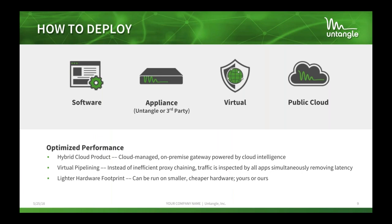Untangle is by design a piece of software — we sell appliances with it pre-installed, but you can use third-party hardware, our OVA file for VMware ESXi, or throw our ISO download into Hyper-V or Citrix Xen. We also now have two different options for installing Untangle into Amazon Web Services — either as a firewall protecting servers like a data center, or routing your traffic to the cloud to filter everyone.